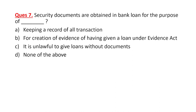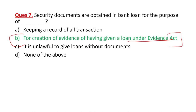Security documents are obtained in bank loans for what purpose? The purpose is the creation of evidence of having given a loan under the Evidence Act. While bank statements record all transactions and serve as good evidence, security documents are specifically required for creation of legal evidence of the loan under the Evidence Act.